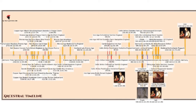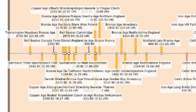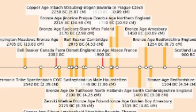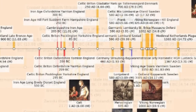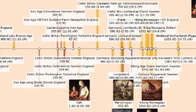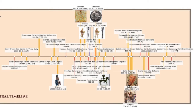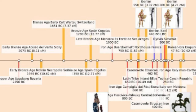Here's a timeline view of the ancient samples that match the modern English person. The yellow lines denote ancient samples with shared DNA in centimorgans, and the red and blue lines denote genetic closeness with ancient samples. And here we have the timeline of ancient samples that match with our modern Cantabrian person.